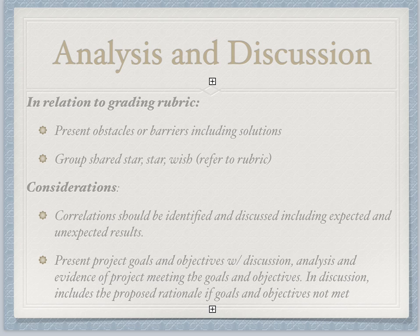Considerations as you're writing your analysis and thinking about your discussion piece: correlations should be identified and discussed, including expected and unexpected results. Sometimes we learn things we didn't plan for, or we get some more insight — the insight that you gather is sometimes as important as what you were looking for. Going back to goals and objectives, when you're presenting, you want to continue to talk about your goals and objectives in your discussion analysis and show us the evidence of how you met some of these goals and objectives. If you did not meet them, propose a rationale — reflect as a group and individually on what you think would have made a difference if you were to do this again, and why some of the objectives were not met.